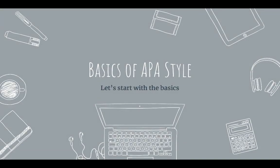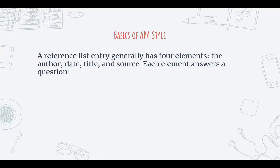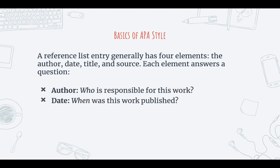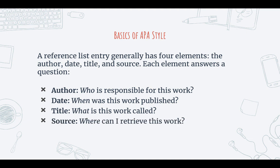Now let's start with the basics of APA style. A reference list entry generally has four elements: the author, date, title, and source. Each element answers a question. Author: who is responsible for this work? Date: when was this work published? Title: what is this work called? Source: where can I retrieve this work? So the reference list entries will answer the who, when, what, and where.